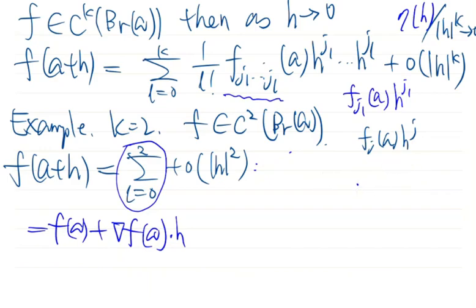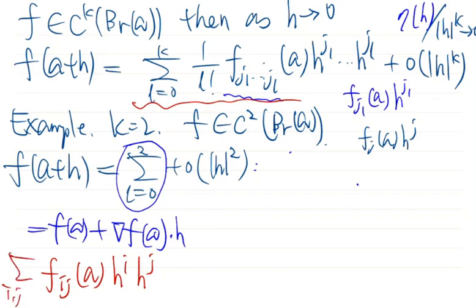So for the term K equal to two, we have F_{ij}(A) H^i H^j. For L equal to two, we have j1, j2. As before, we replace j1 by the index i, j2 by the index j. So the L equal to two term in this expansion is this. Of course, we have used the Einstein summation convention, so if you like, you need to write i,j from one to n. So this is the L equal to two term in the Peano, in the Taylor expansion.